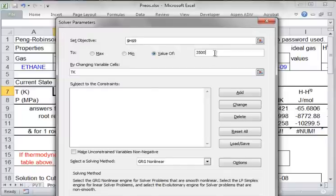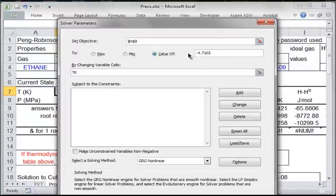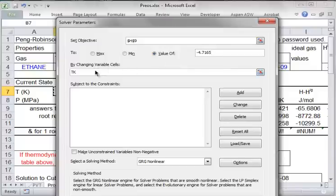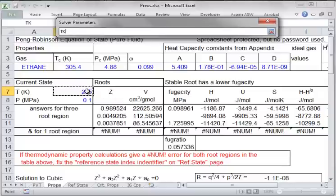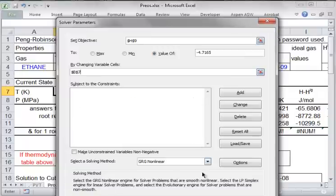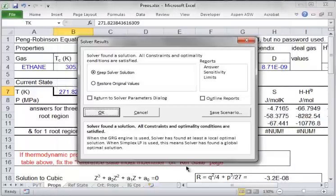And I'm looking for a value of minus 4.7165. And I'm going to change the temperature.